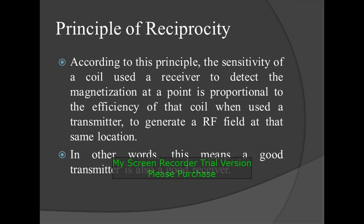Principle of reciprocity: according to this principle, the sensitivity of a coil used as a receiver to detect the magnetization at a point is proportional to the efficiency of that coil when used as a transmitter to generate an RF field at the same location.